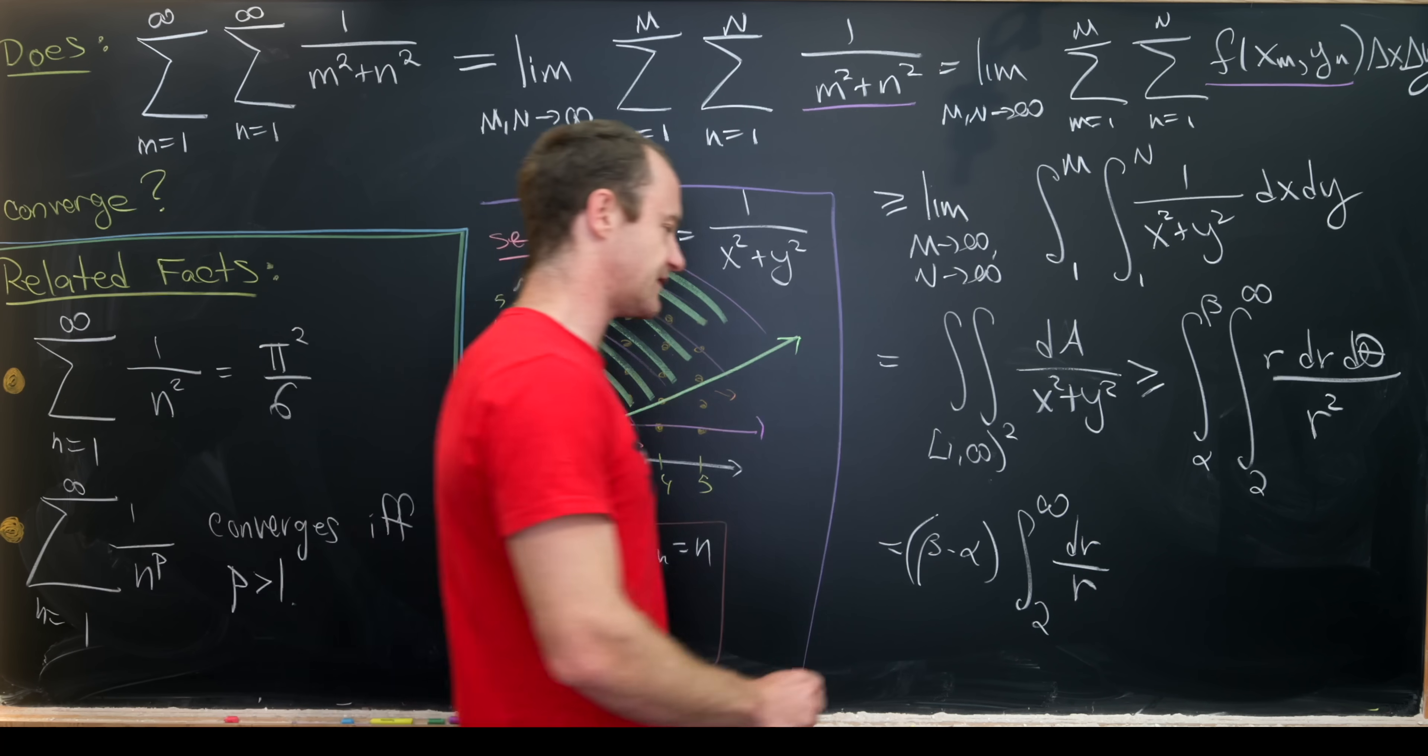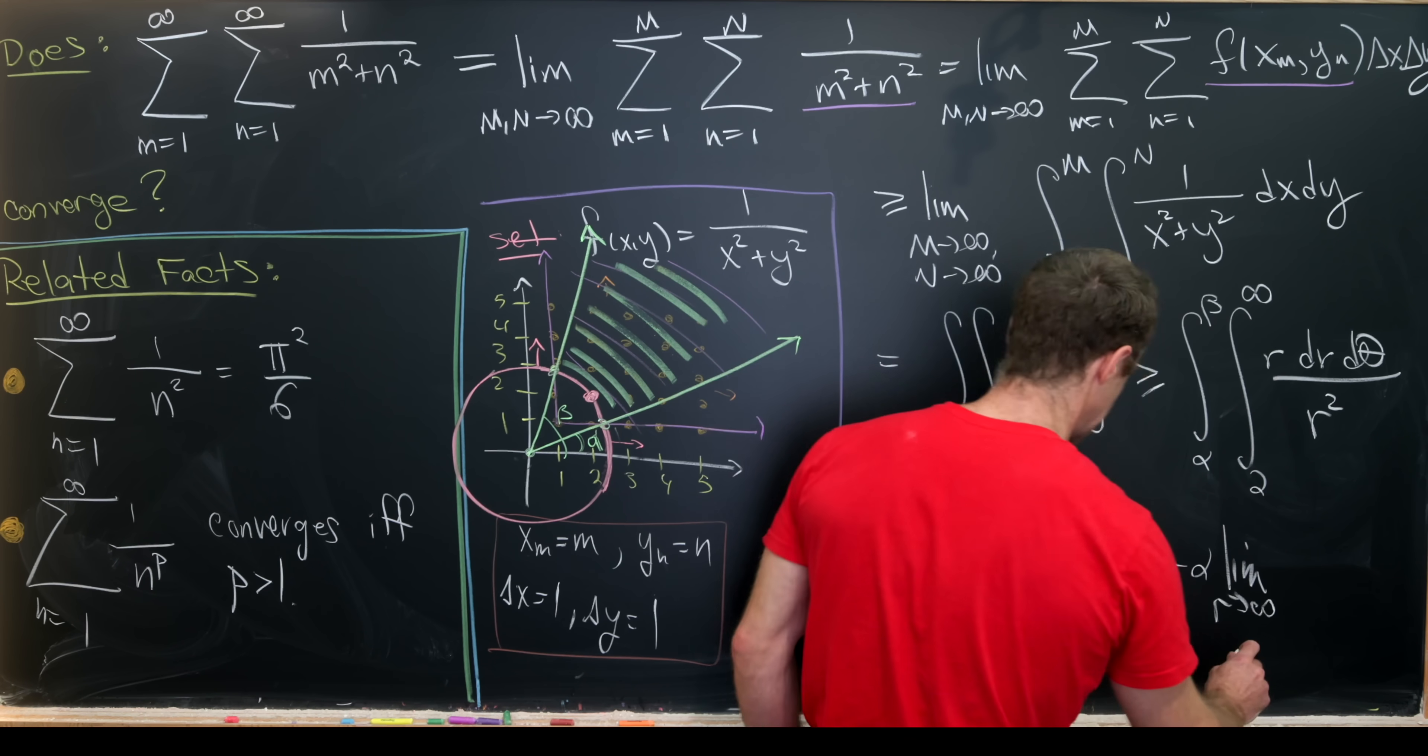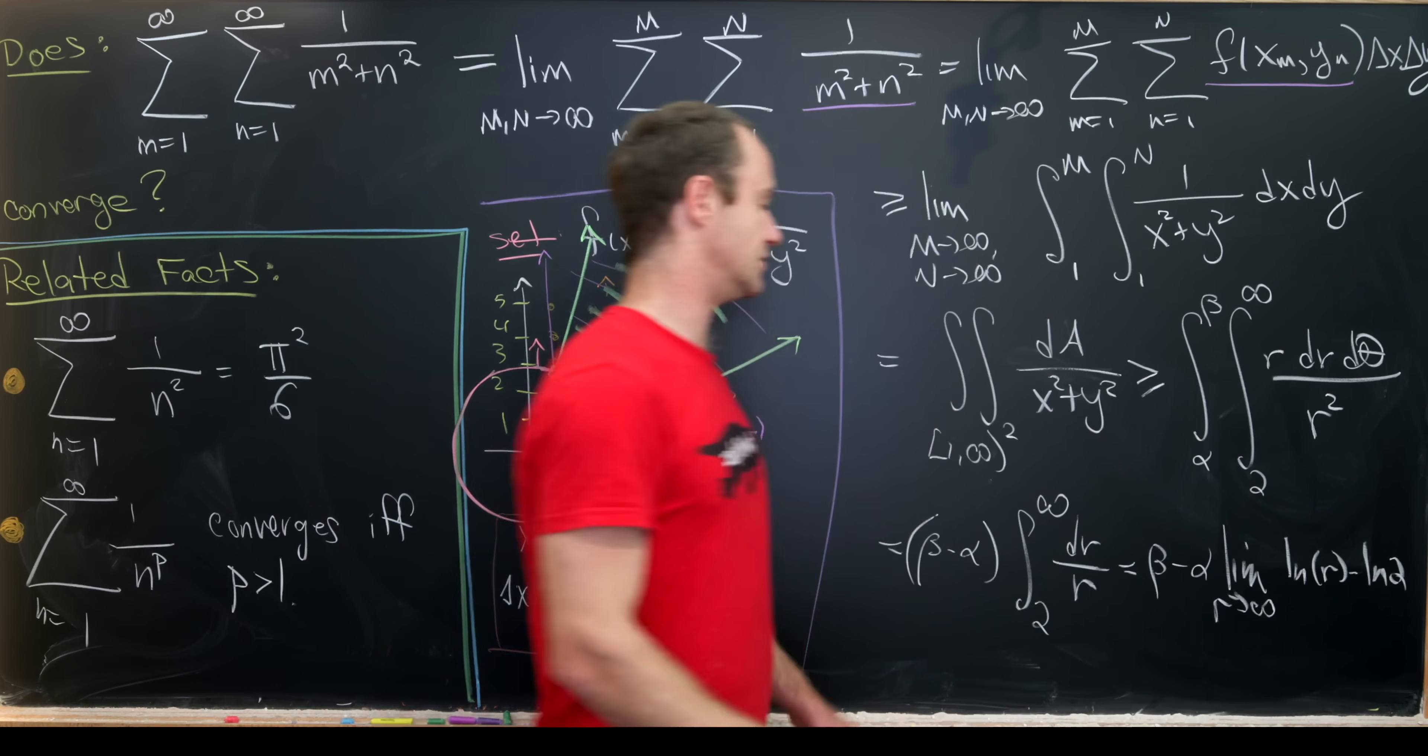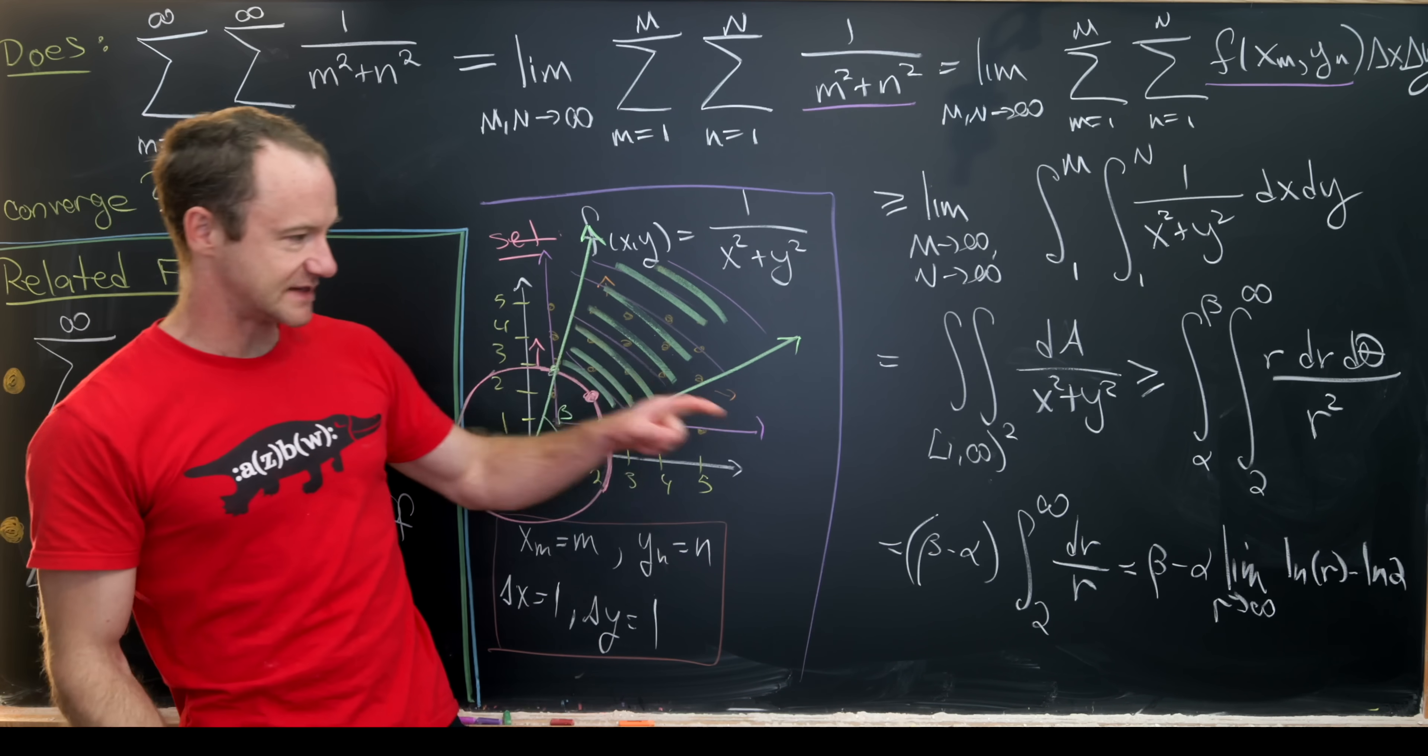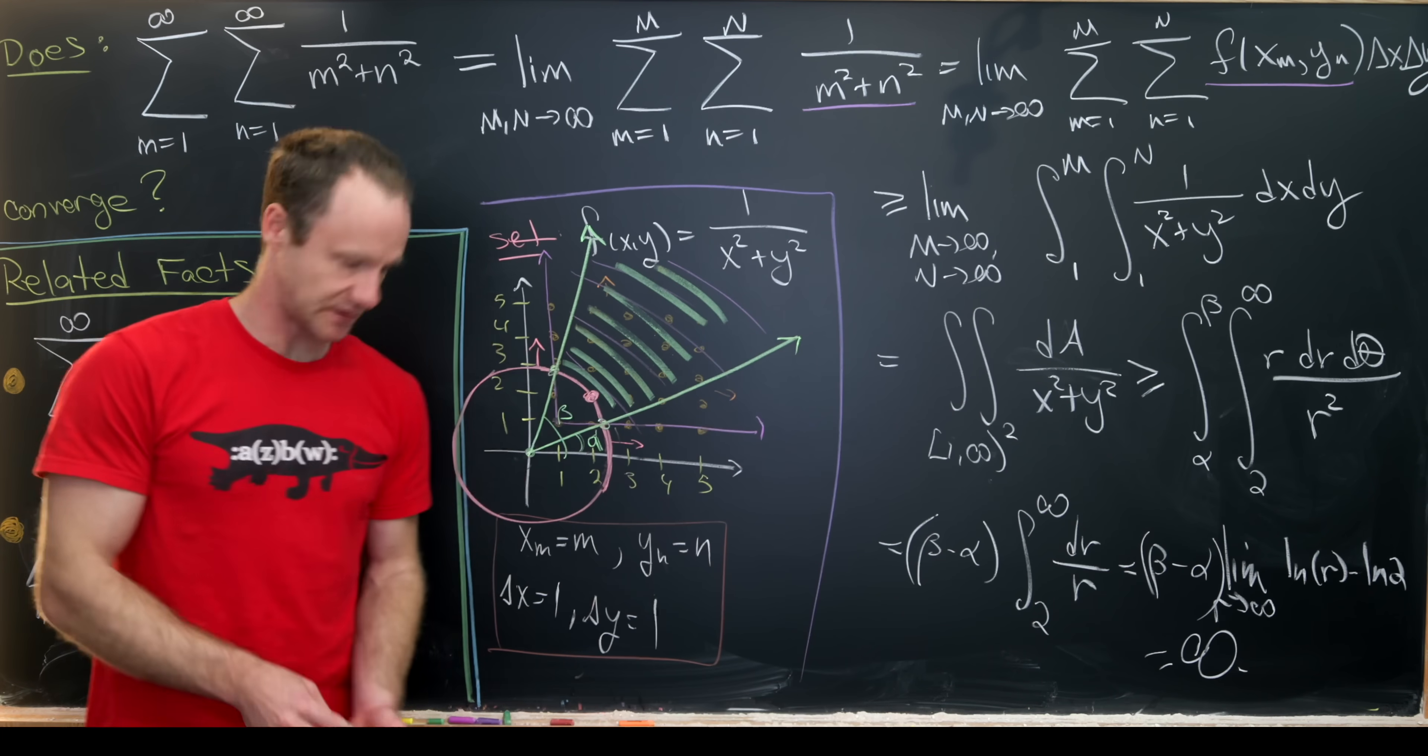But then by using the fundamental theorem of calculus, this gives us beta minus alpha, and then the limit as r goes to infinity of the natural log of r minus the natural log of two, taking the antiderivative of one over r. But as r goes to infinity, the natural log of r also goes to infinity. So that means this whole thing trends off to infinity.